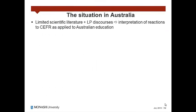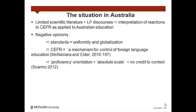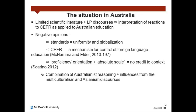The available scientific literature on the reception of the CFR in Australia is still very limited. In light of these language policy discourses currently in force, we can interpret reactions to the CFR as applied to education. On one hand, opinions expressed by researchers and experts are mainly negative, arguing that standards in general impose uniformity and globalization, and that the CFR in particular has emerged as a mechanism for control of foreign language education throughout every level of the educational system. Moreover, the proficiency orientation and the absolute scale founding the CFR do not give credit to the context in which a language is acquired, while achievement orientation currently promoted in Australia for Asian languages actually does. This kind of attitude uses a combination of Australianist reasoning.